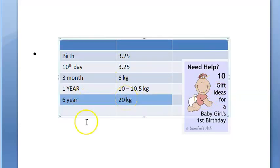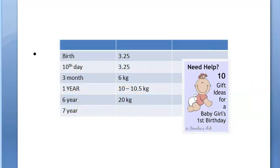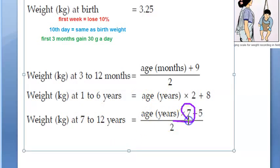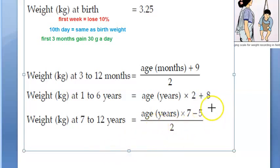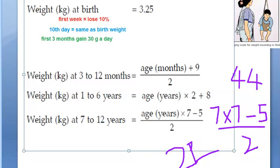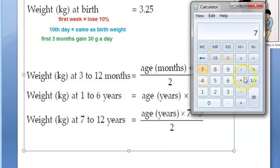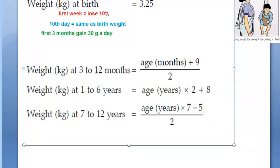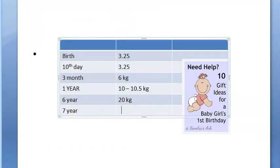For 7 to 12 years, there is a new formula: age in years multiplied by 7, minus 5, divided by 2. At 7 years: (7 × 7 − 5) / 2 = (49 − 5) / 2 = 44 / 2 = 22 kgs. So at the 7th year birthday, the expected weight is 22 kgs.